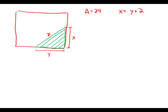Well, because it's a triangle, we know that the area of a triangle is one-half base times height. So 24 equals one-half the base y times the height x. Multiply by 2 and we get 48 equals x times y.